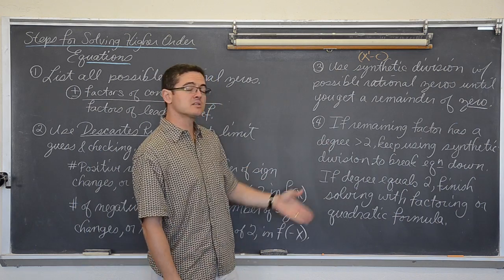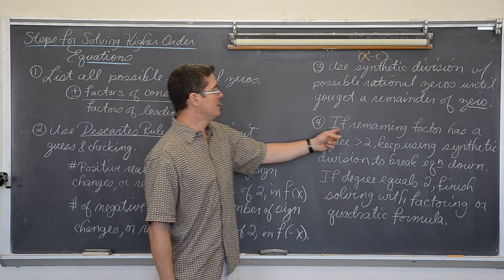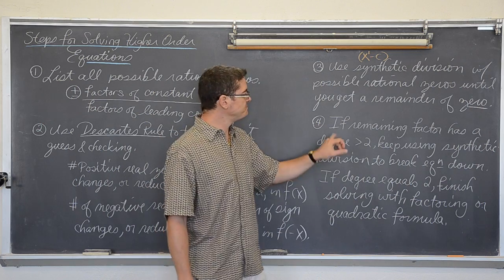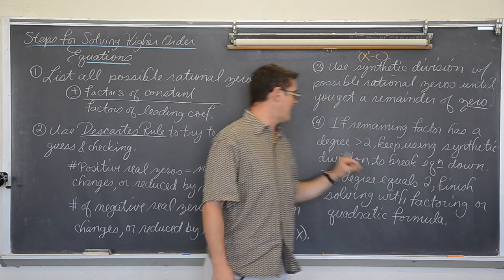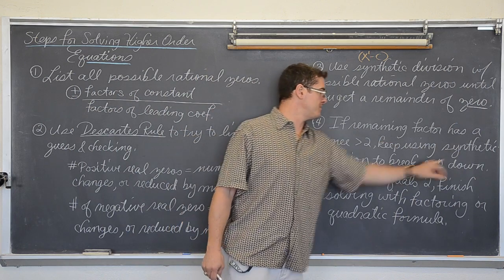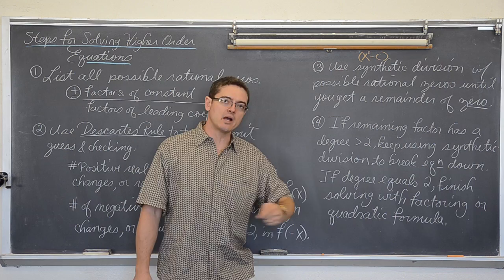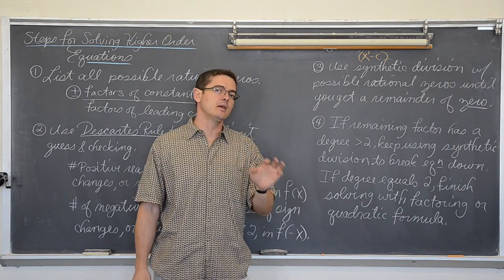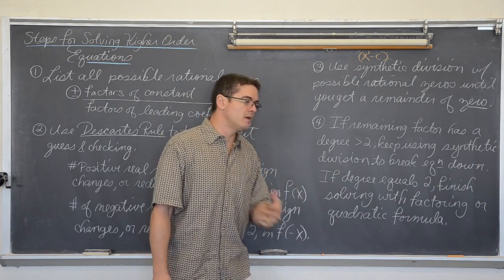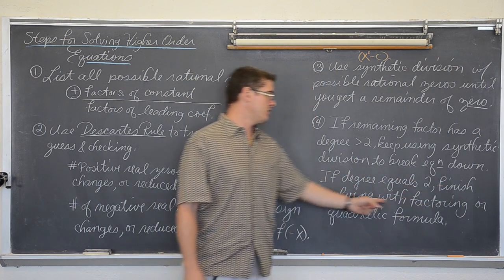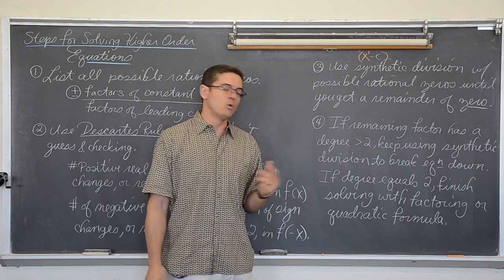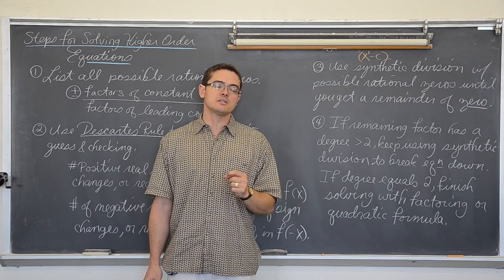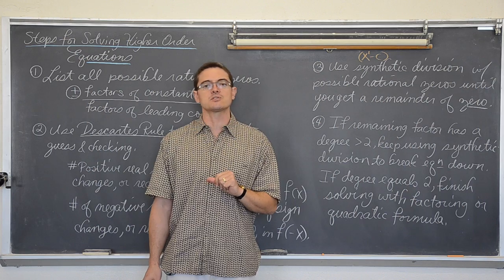That would be nice because we can solve second-degree equations. If the remaining factor — the new polynomial at the bottom of the synthetic division — still has a degree greater than 2, then you are going to have to keep doing synthetic division to find another remainder of zero, another x-intercept, until eventually you bring those degrees down to 2. Once you get to a degree of 2, you can finish with the quadratic formula or factoring.